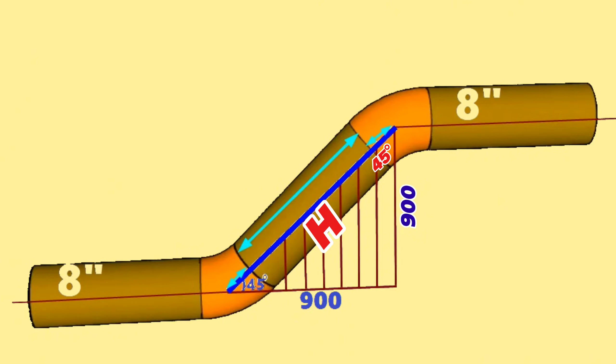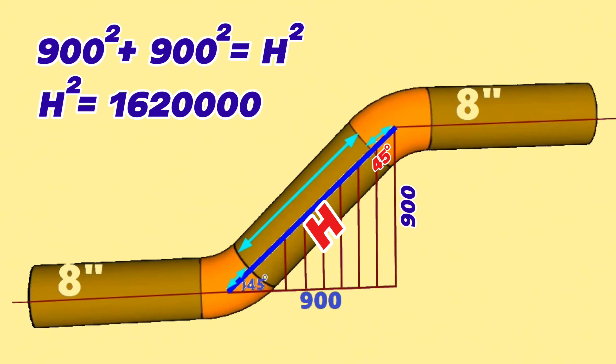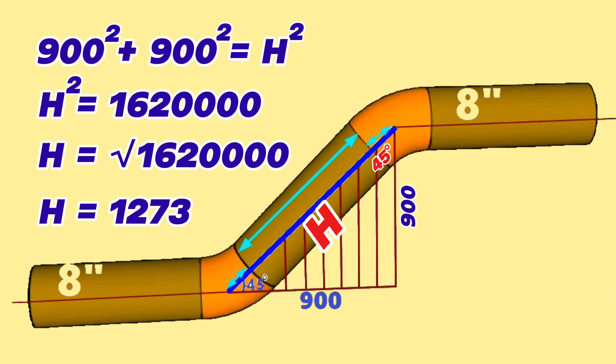According to the Pythagorean theorem, 900 squared plus 900 squared equals H squared. Continuing to calculate, H squared equals 16,200,000. H equals the square root of 16,200,000. At last, we will use a scientific calculator and found H is approximately 1,273 millimeters.